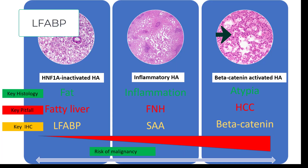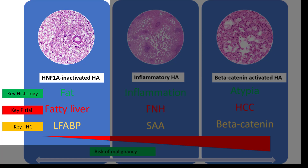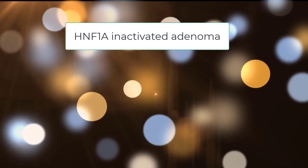This is a classic fatty adenoma. Just to reiterate: what we discussed is an HNF1-alpha inactivated adenoma. The key histologic feature is fat in the adenoma — though fat can occur in other adenomas as well. The key pitfall is that you might mistake this for a fatty liver or steatohepatitic liver. The key immunohistochemical stain is an antibody to LFABP — it's the loss of that staining that is helpful. Remember, these can be multiple, and they are associated with a very low risk of transforming to malignancy, specifically hepatocellular carcinoma.